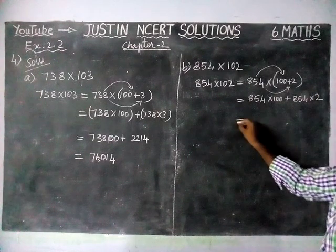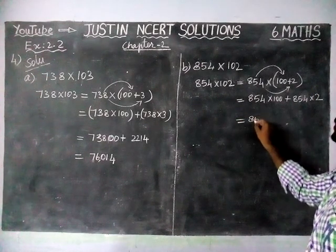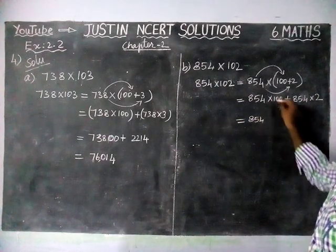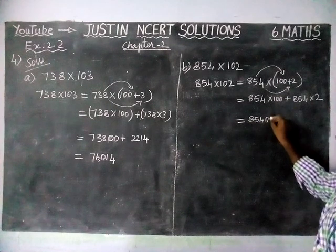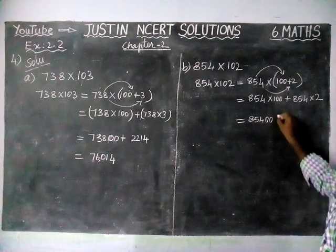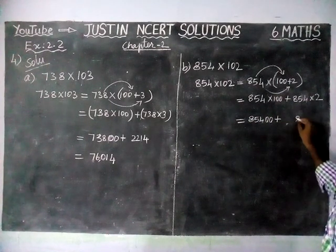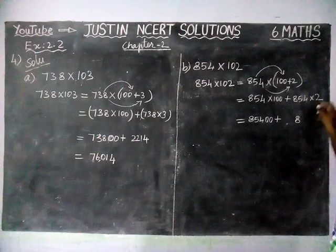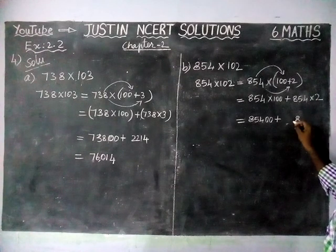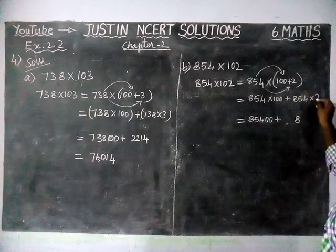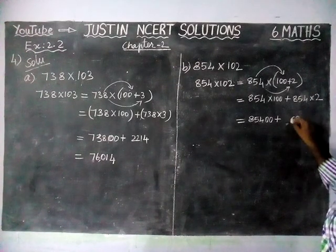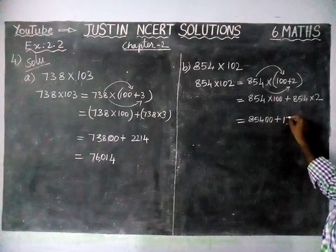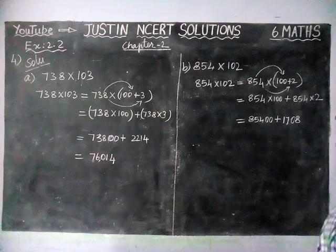When multiplying 854 by 100, we add two zeros to get 85,400. Then we multiply 854 into 2: 4 twos are 8; 5 twos are 10, write 0 carry 1; 8 twos are 16, 16 plus 1 is 17.